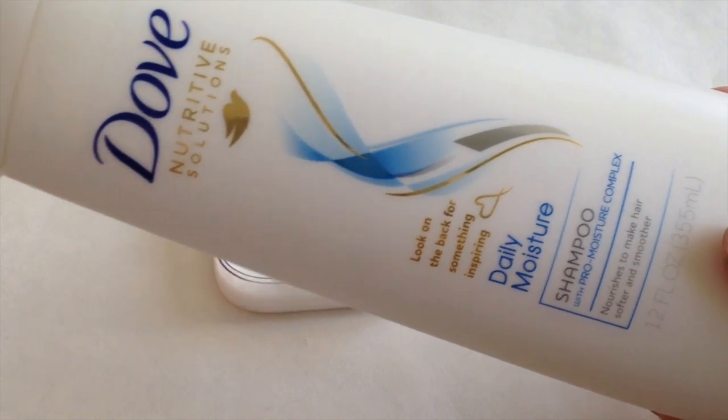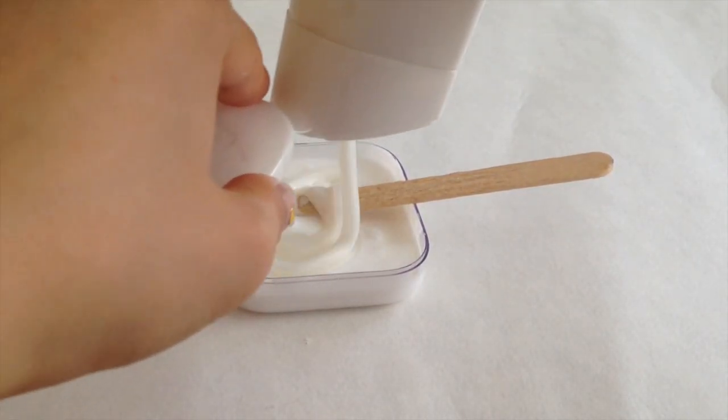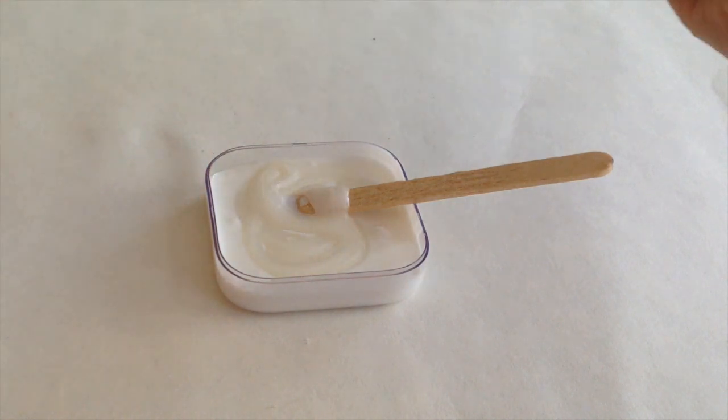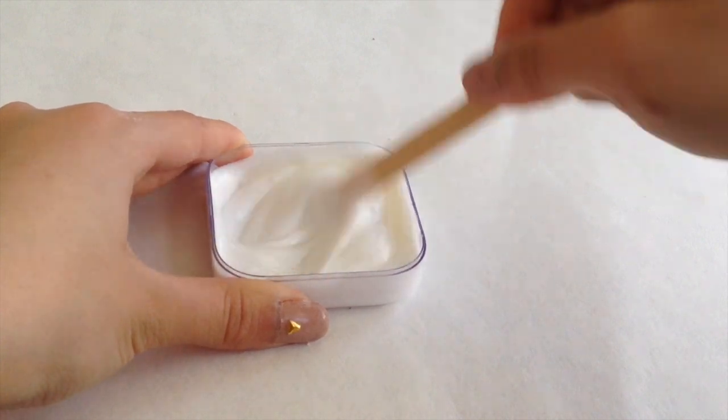Next you are going to add in your shampoo or soap. I forgot to mention this earlier but make sure that your shampoo or soap is either white or clear in color, because you want to keep the slime white so that it resembles milk.